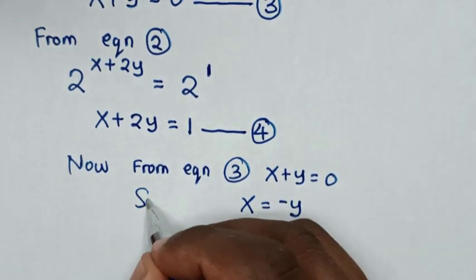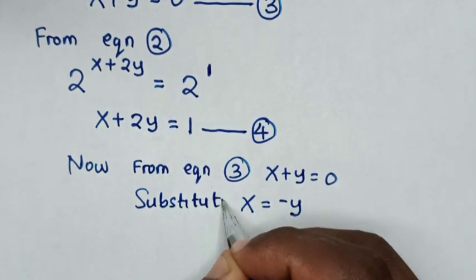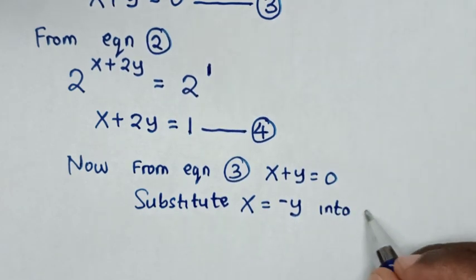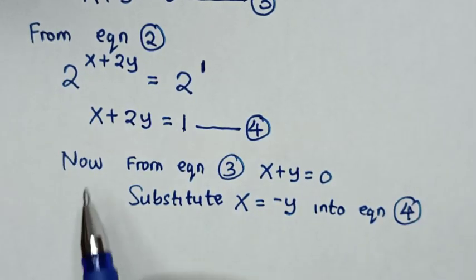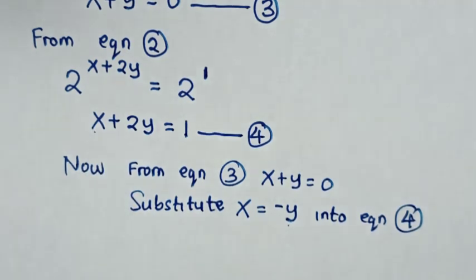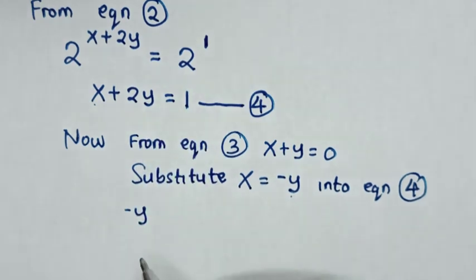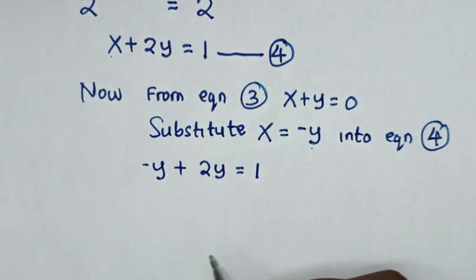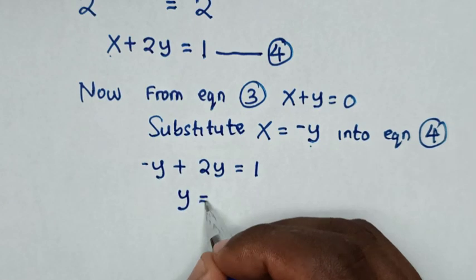We substitute x = −y into Equation 4. From Equation 4, replacing x with negative y, we get: negative y plus 2y is equal to 1, which simplifies to y is equal to 1. So we have found the value of y.